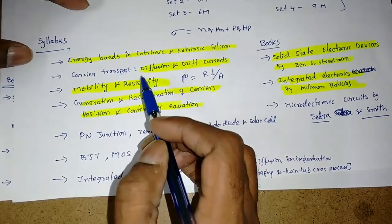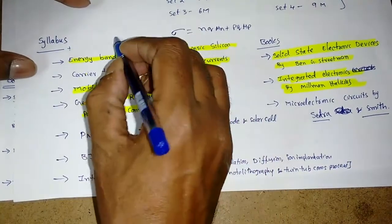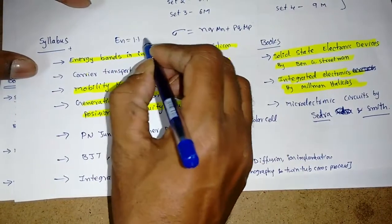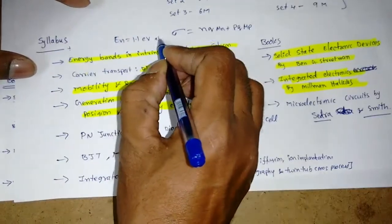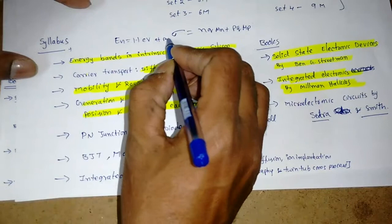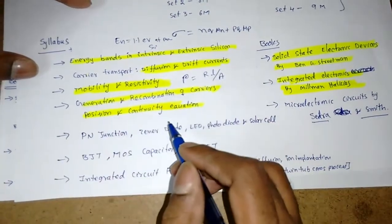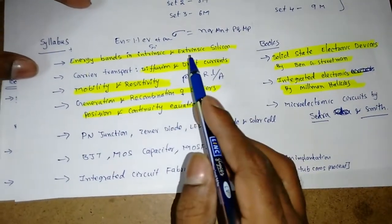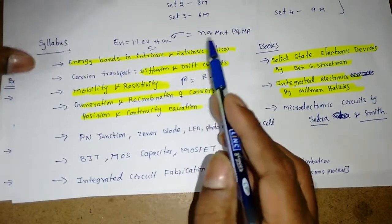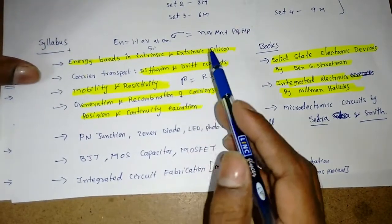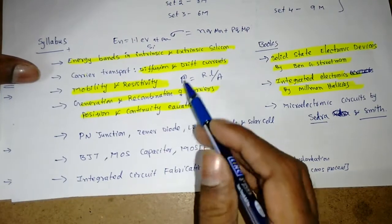In intrinsic semiconductor, what are the band gaps? Like Eg = 1.1 eV at room temperature for silicon, or 0.7 to 0.785 at 0 degrees Kelvin, or 0.72 at room temperature for germanium semiconductor.